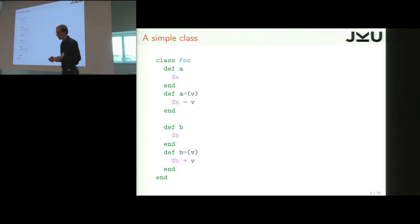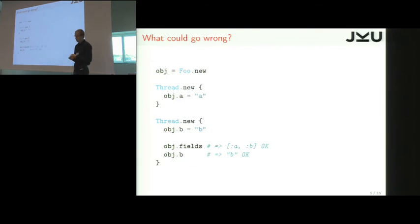We start with a very simple class called foo and we just have convenience methods. This is a getter and this is a setter for field A and the same for field B. And we question ourselves, what could go wrong?